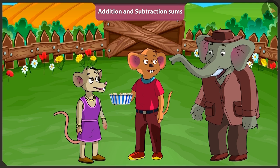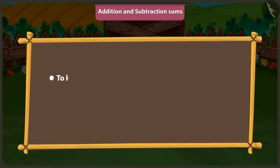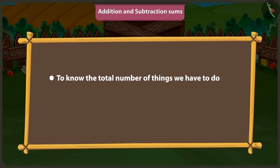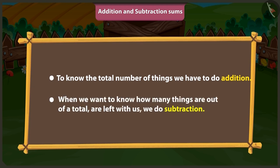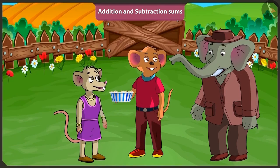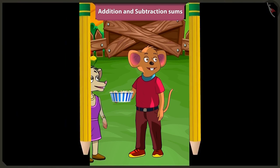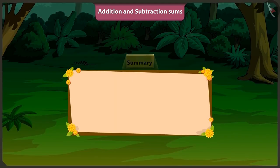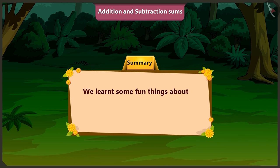Children, now you would have understood when to do addition and when to do subtraction. Yes, Uncle — when we have to know the total number of things, we have to do addition. And when we have to know how many things are left from the total, we have to do subtraction. Well done, children! Now you both play and I will go. Bye, Uncle. Friends, today we learned some interesting things related to addition and subtraction of two-digit numbers.